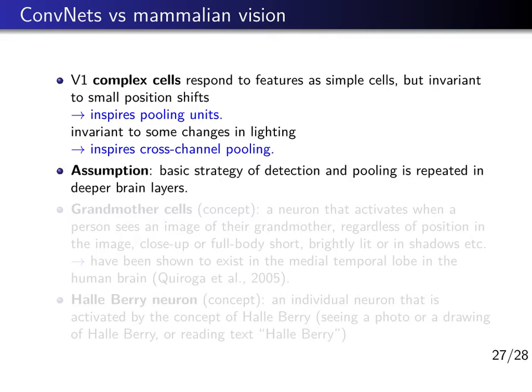There is an assumption, and to some degree knowledge, that the basic strategy of detecting and pooling is also repeated in deeper brain layers, although the human brain or mammalian brains are definitely not deep compared to current deep artificial neural networks.